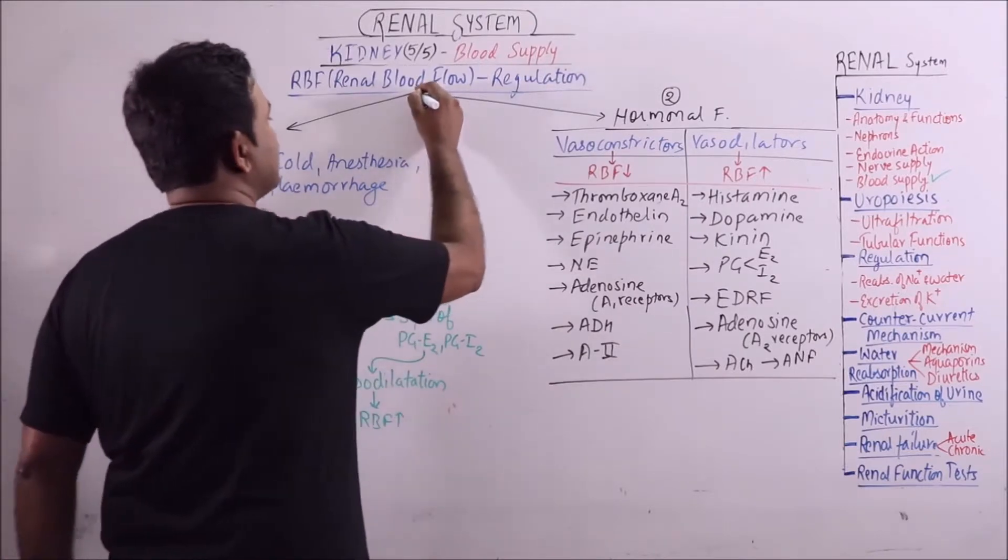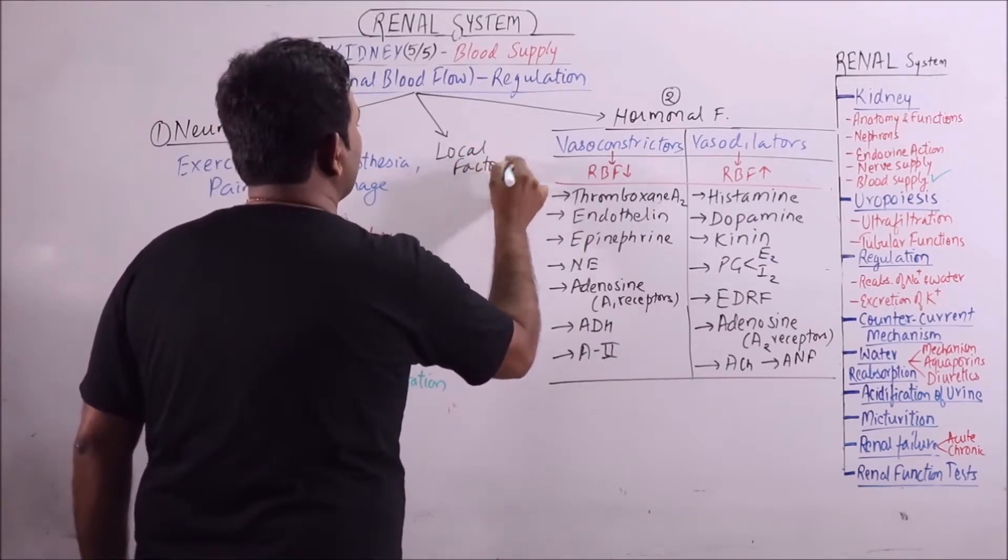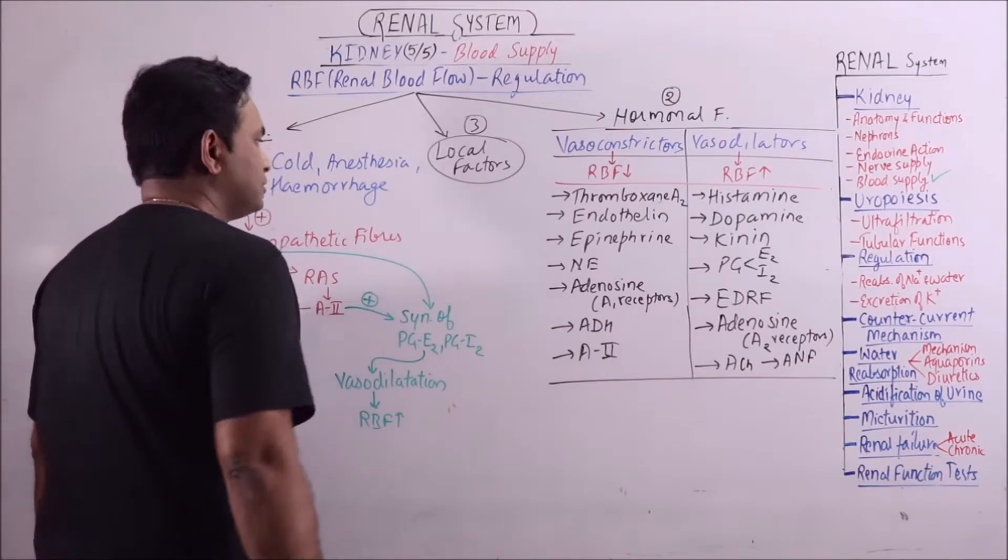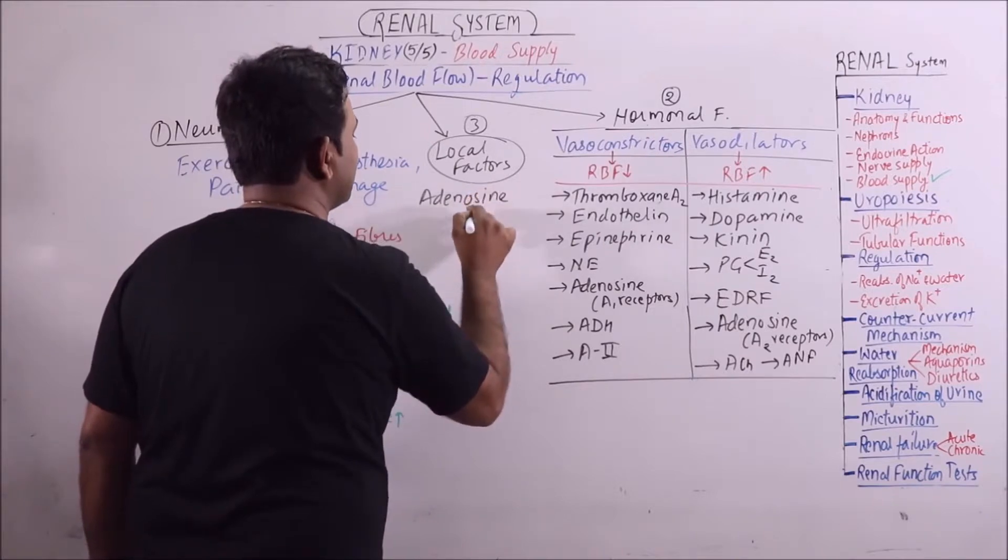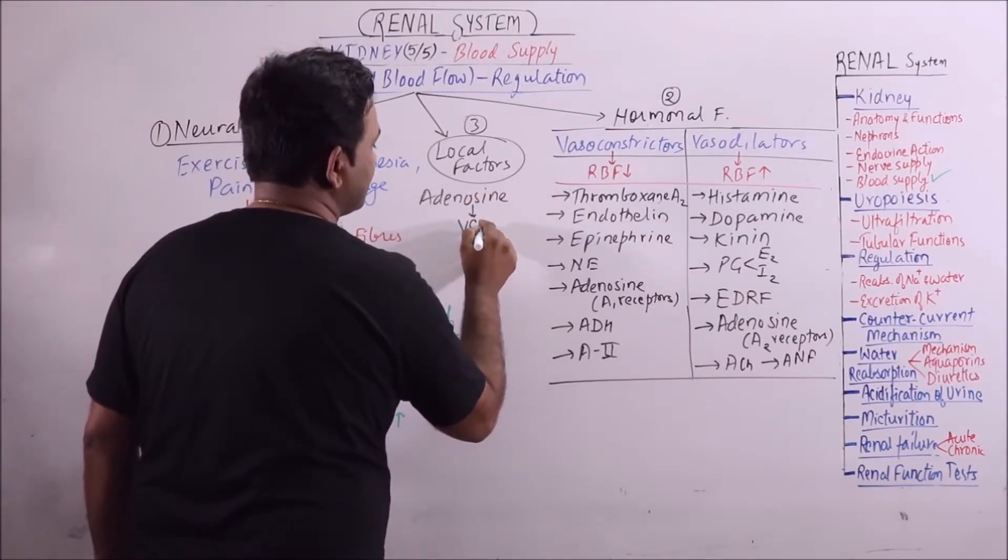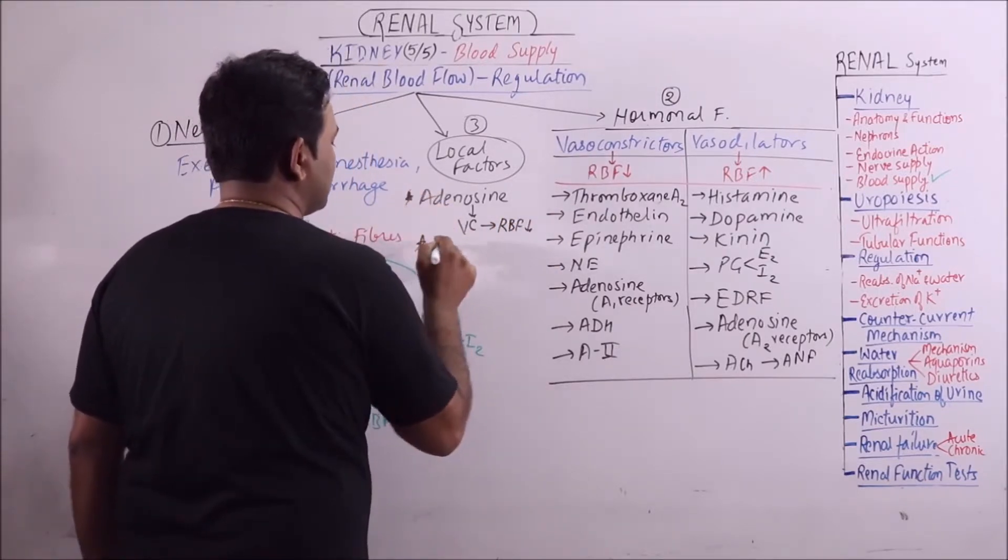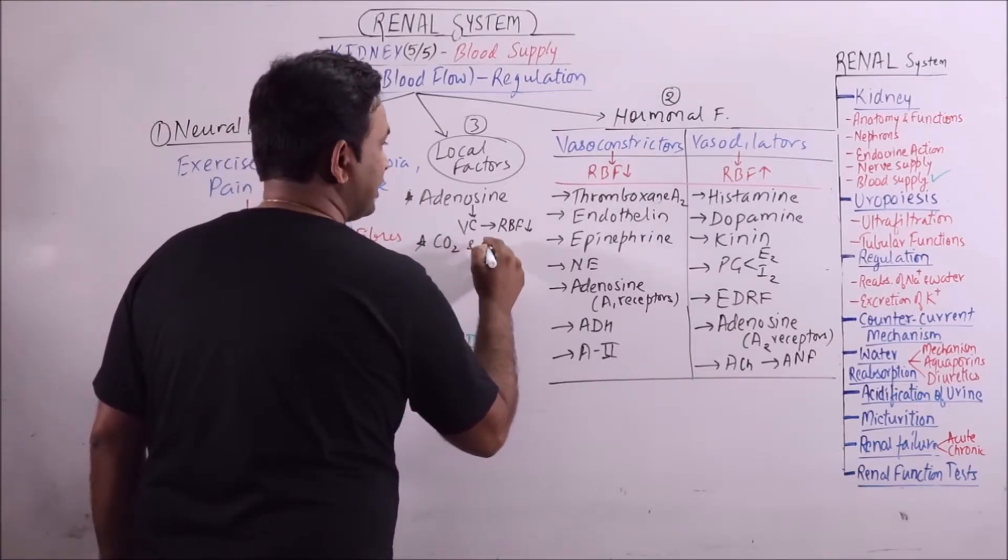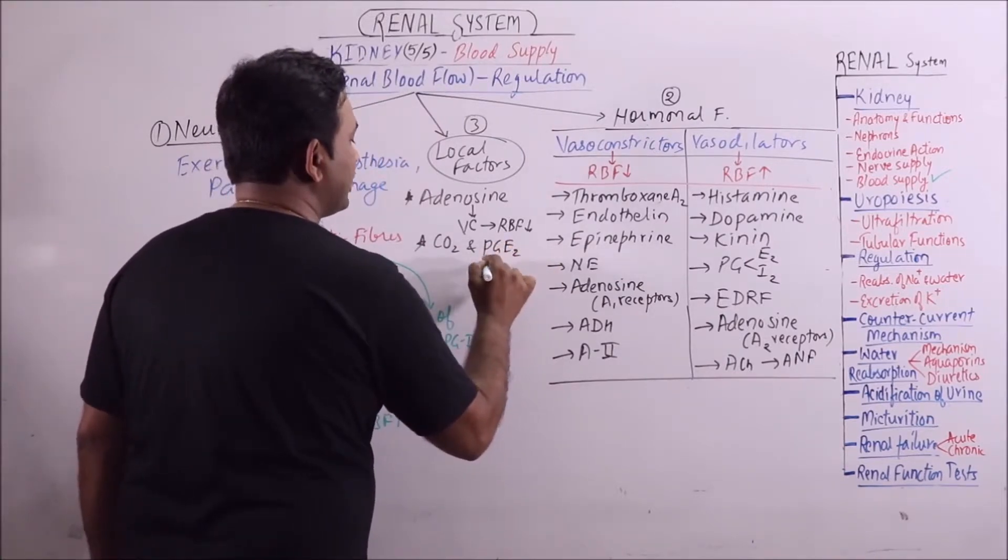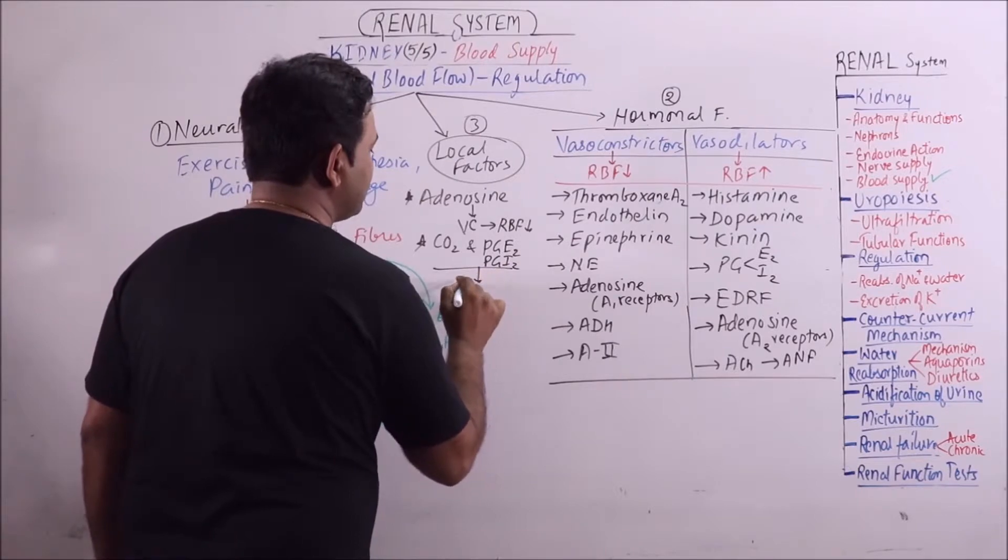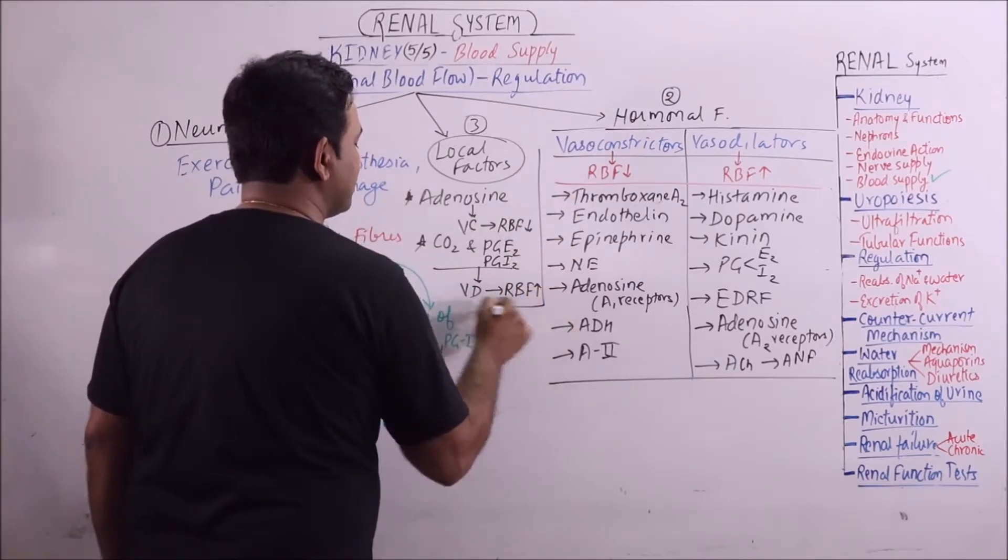The third factor is local factors which are produced as metabolites. For example, adenosine, it is a vasoconstrictor and will result in decrease in RBF. Then CO2 and prostaglandins like PGE2 and PGI2, these will cause vasodilation and will result in increase in RBF.